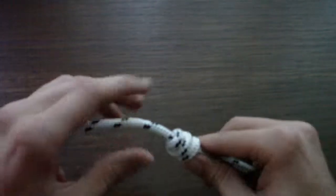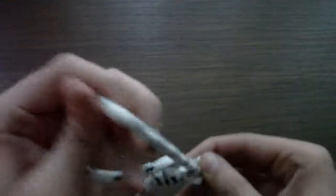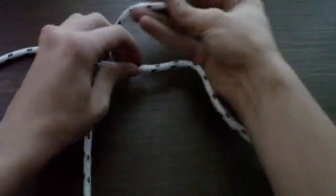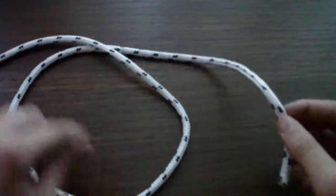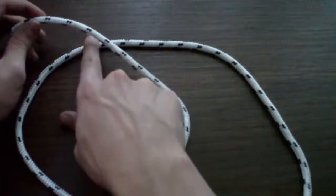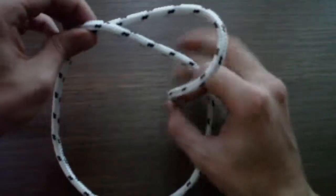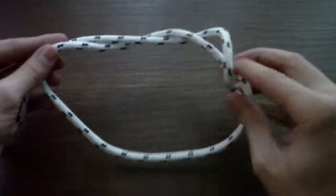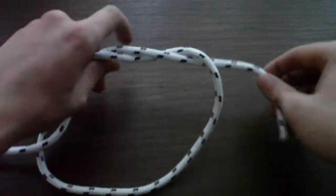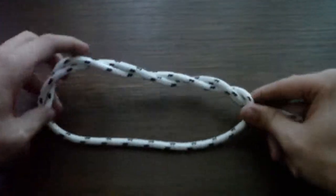So again, I am going to do it another time. So we start like this with the running end going below the standing part of the rope. We are going to go once, twice, and three times.